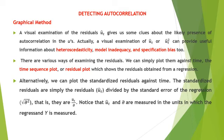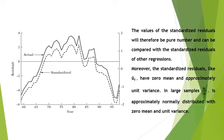First, we can plot the residuals against time or space and observe if there exists a distinct pattern. Second, we can plot the successive residuals against each other, i.e., against their own lagged values. If we observe any pattern in the residual plot, it confirms autocorrelation. We can use time sequence plots where we simply plot the error term u_t against time, showing the residuals from a regression. Alternatively, we can plot the standardized residuals against time, as shown in the diagram.